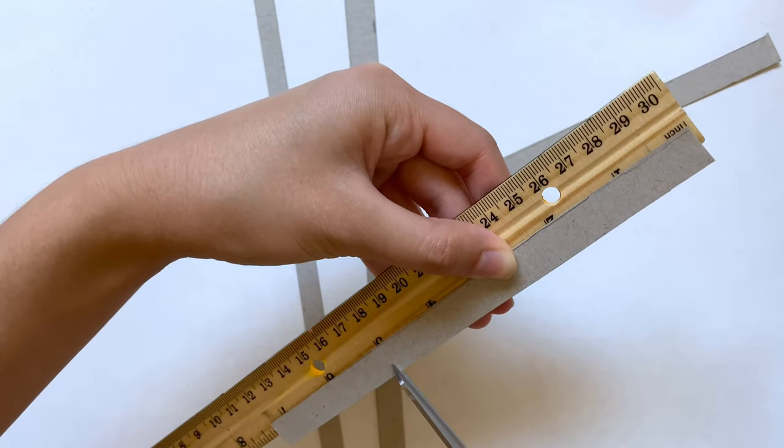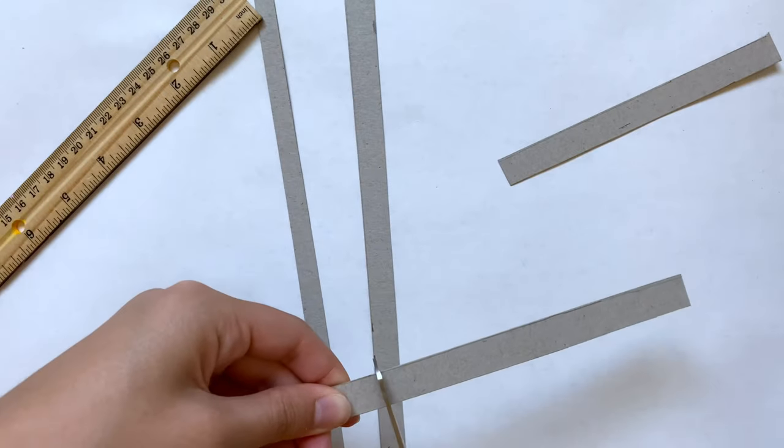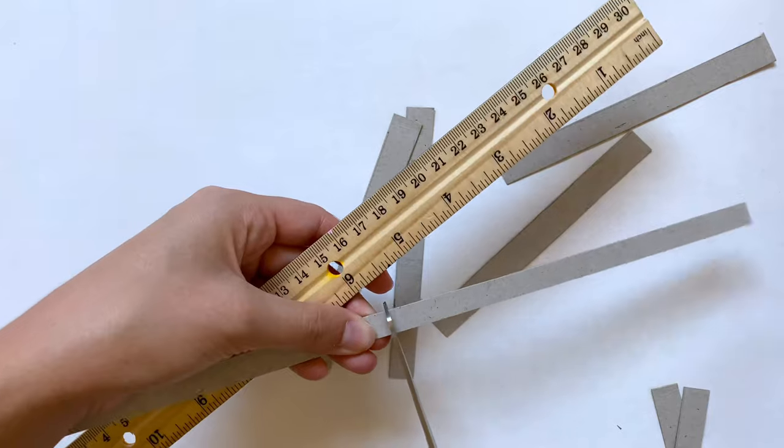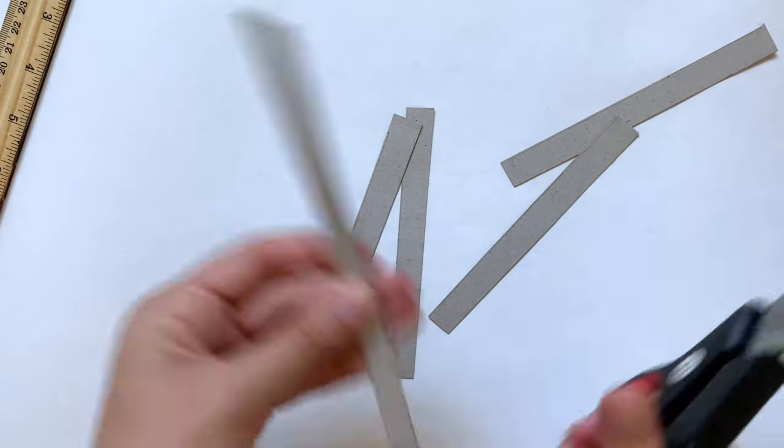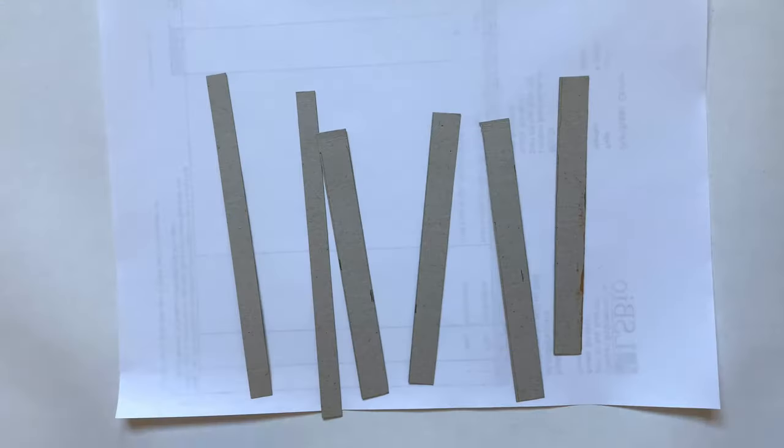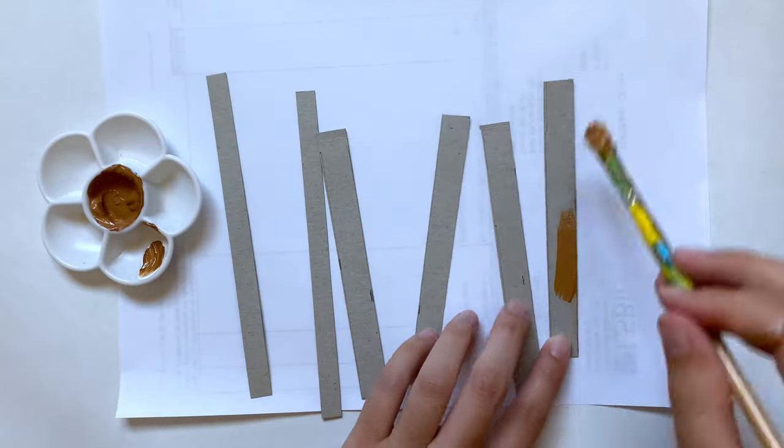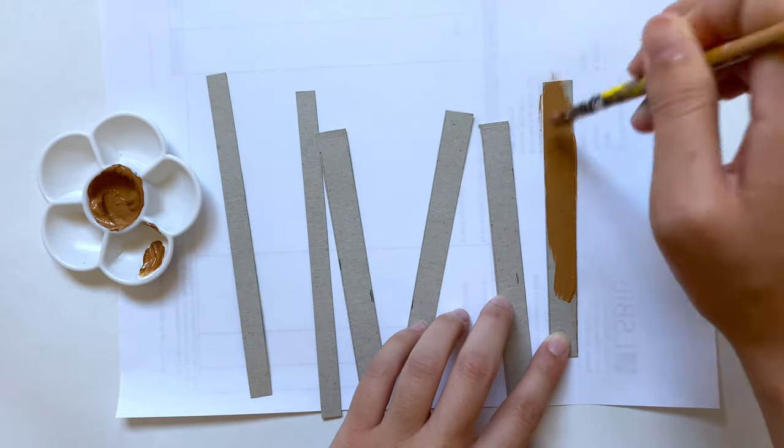But looking back I should have made this way longer, so make sure when you're measuring this for your stuffed animal you add an extra inch to account for where we're going to be gluing these in. For the thinner strip I made mine six inches, which was plenty long for me.